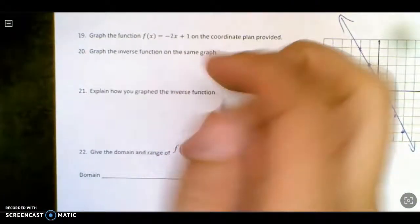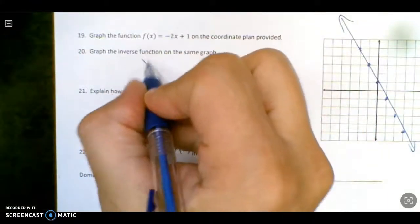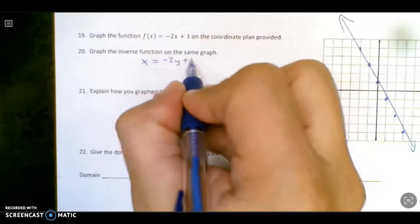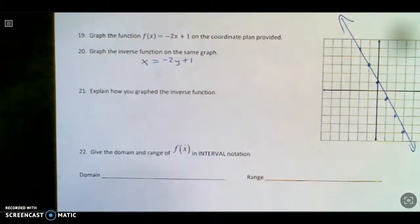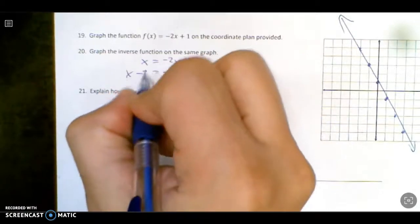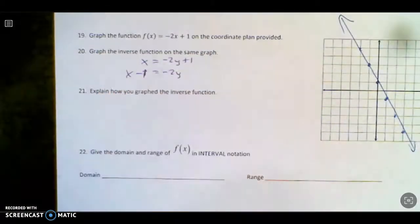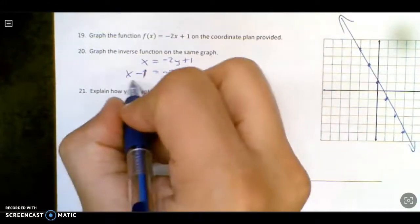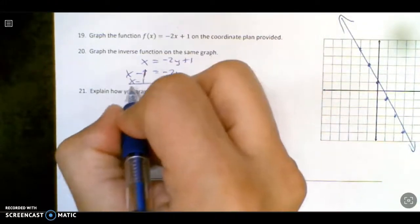Now it says graph the inverse of this guy. So first I've got to find the inverse, right? So I wrote this equation, switch the x and the y's, and I go through my little process here. And divide by negative 2. x minus 1 over negative 2.